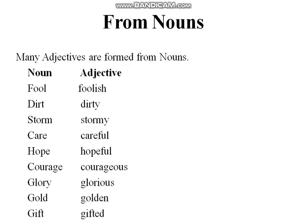Before going to degrees of adjectives, let's first discuss how adjectives can be formed. Adjectives can be formed from different nouns. Many adjectives are formed from nouns — if we add something more to nouns, we can form adjectives from them. Look at the examples: in the first list nouns are given and in another list different adjectives are given which are made from the same nouns.